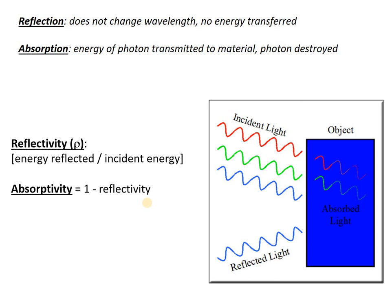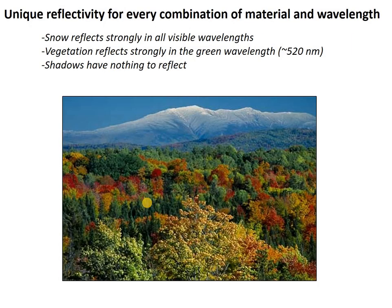These values change by material and by wavelength. In this picture of vegetation, snow, and sky, you can see that different materials are absorbing and reflecting different wavelengths differently. The snow reflects strongly in all the visible wavelengths. The vegetation reflects strongly in the green. And shadows are actually dark because no light is hitting them — they have nothing to reflect. Fundamentally, each material is reflecting or absorbing different wavelengths of light, which gives it a different color.